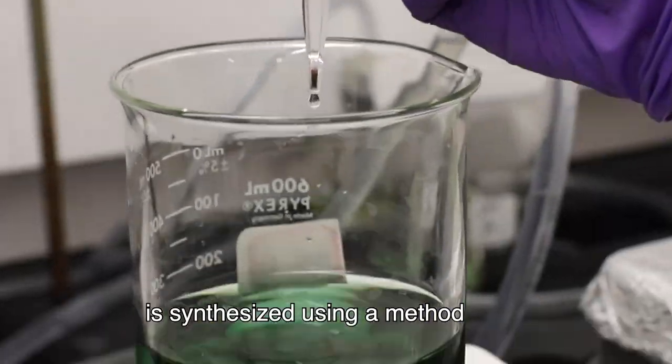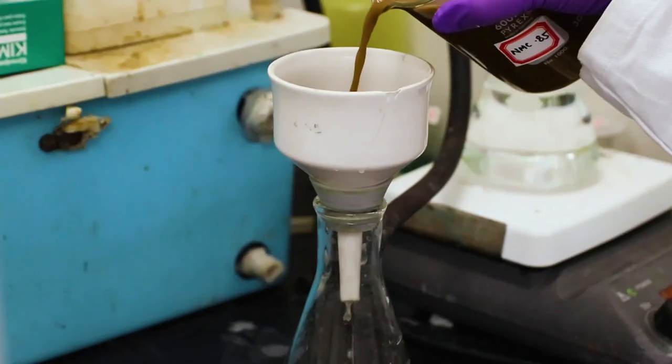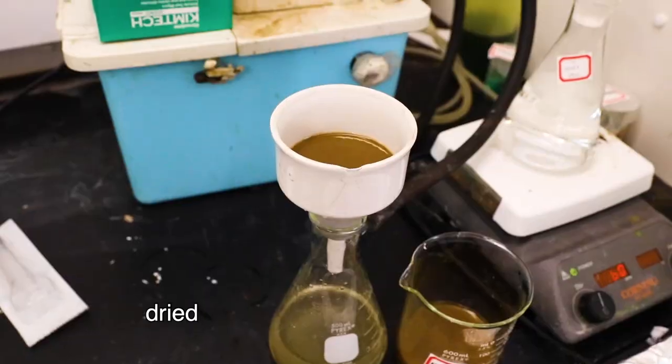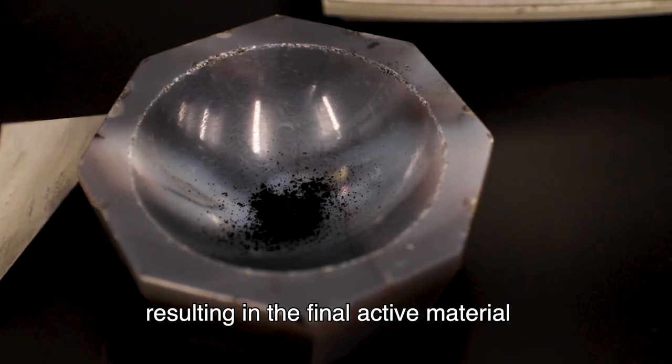The cathode is synthesized using a method called co-precipitation. The precipitate is filtered, dried, and heated with a lithium source in an oxygen furnace, resulting in the final active material.